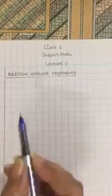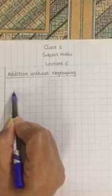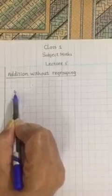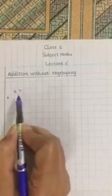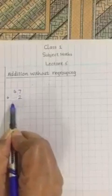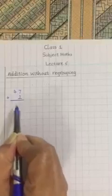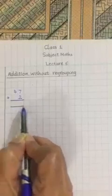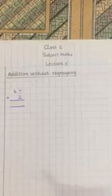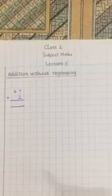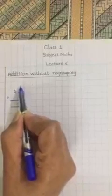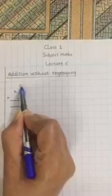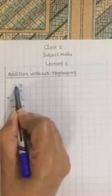First I will write sum 47 plus 2. Whenever you write the place value always start from the 1s. So this is 1s house, this is 10s house.